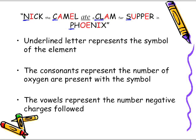The consonants, written in black, represent the number of oxygens that are present with the symbol that starts off each word. And the vowels represent the number of negative charges that follow. We're going to see that breakdown right now.